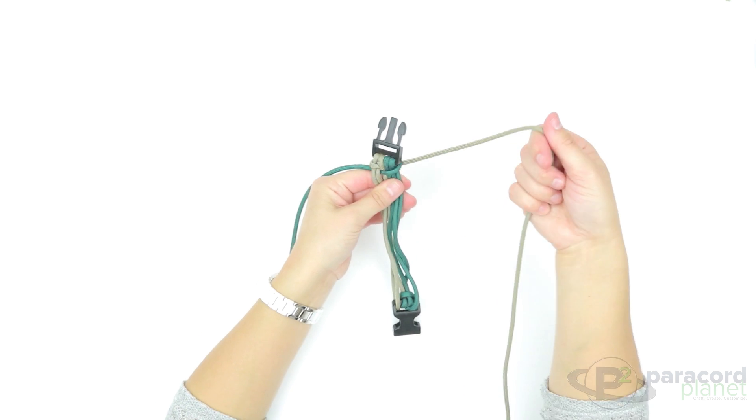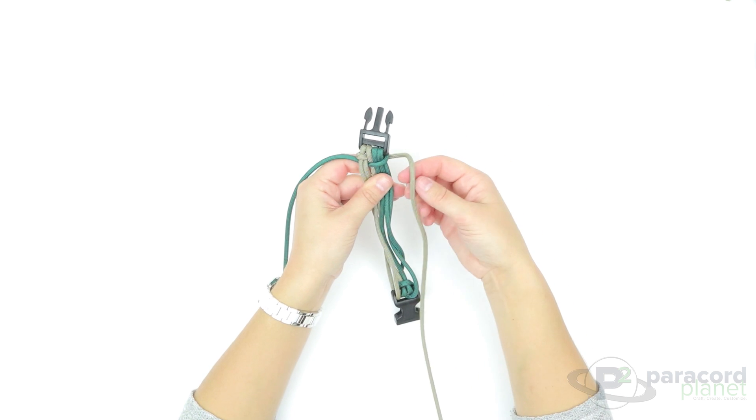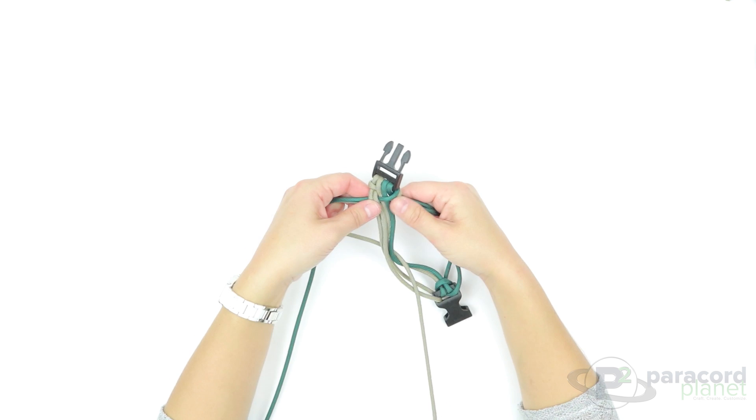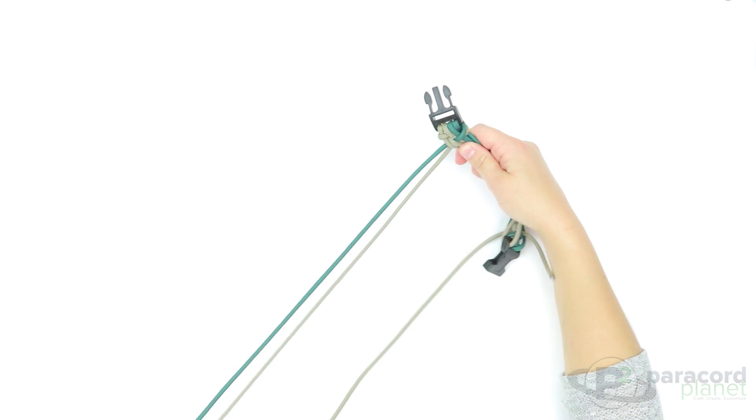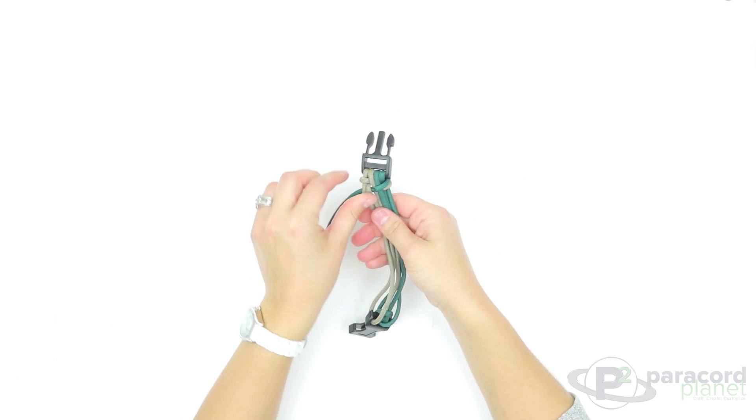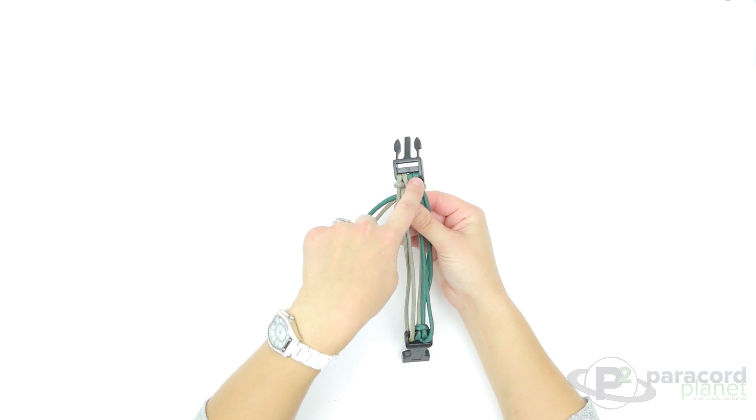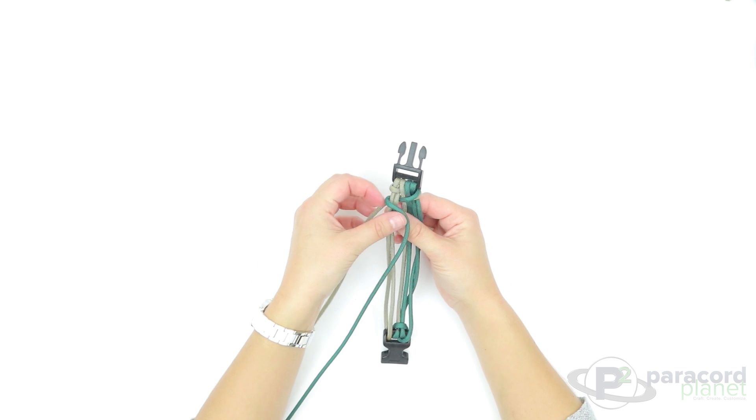You'll take your cord from the left that started on the left and is now on the right, and go over two and behind four. Push them up.